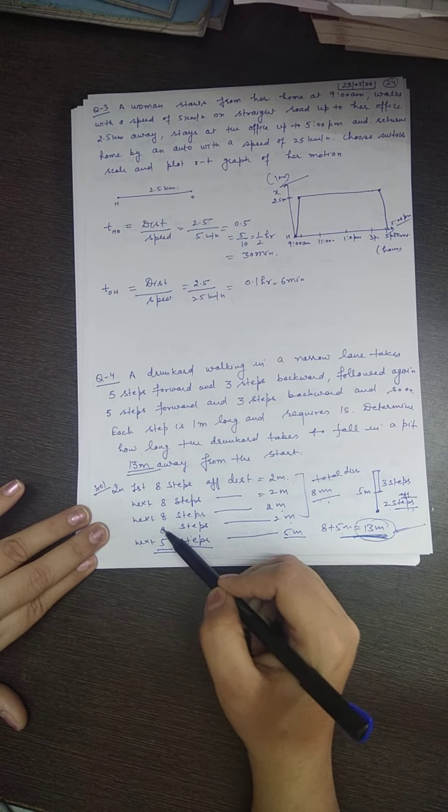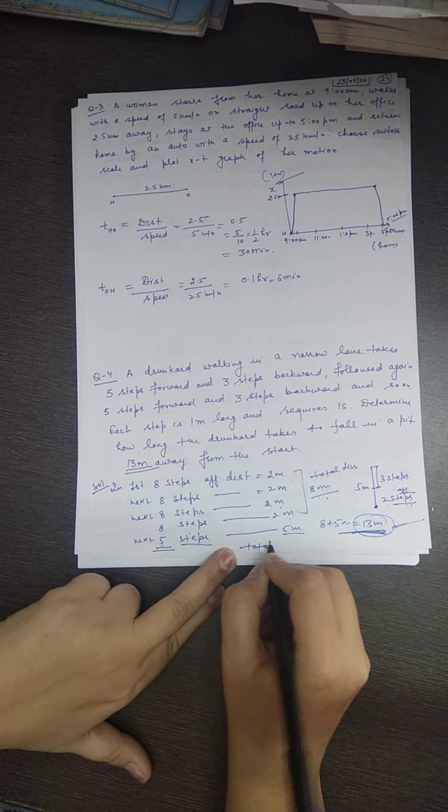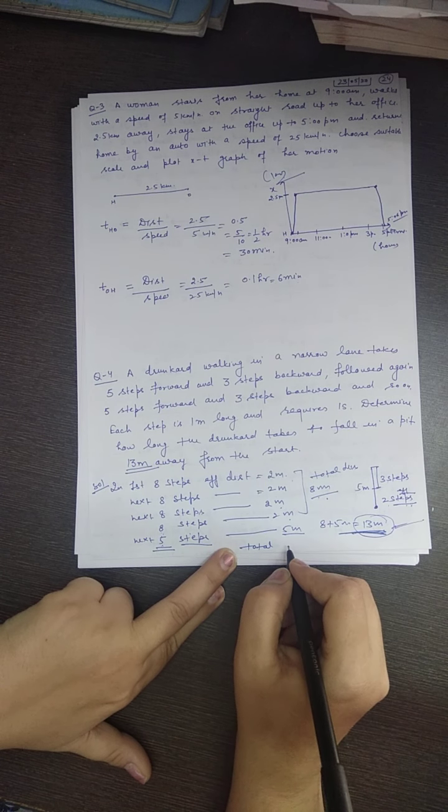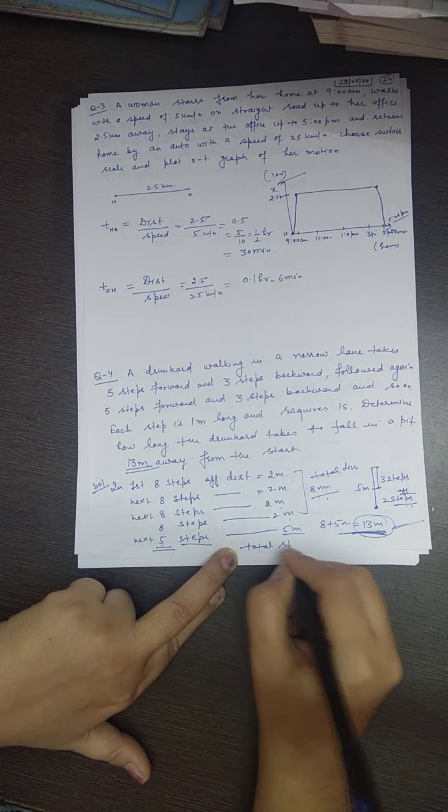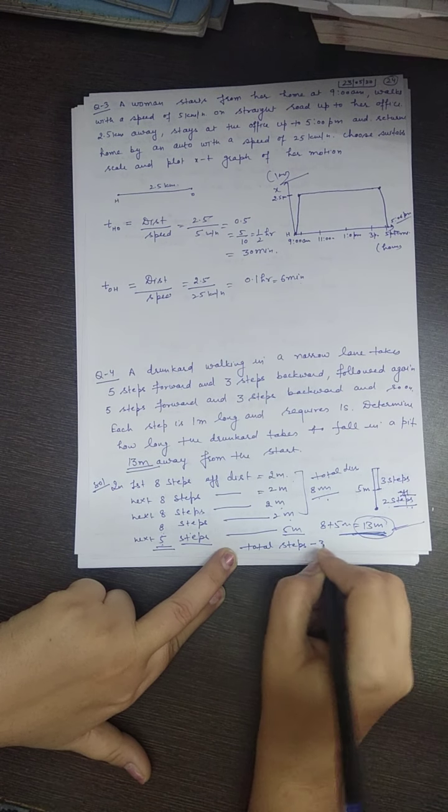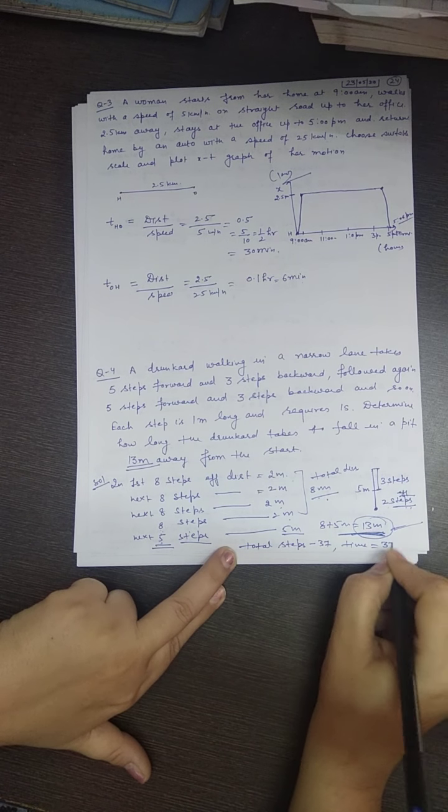Total steps are 37. Find how long the drunkard takes—they're asking for time. Total steps taken: 37. And the time will be 37 seconds. Is it clear, students?